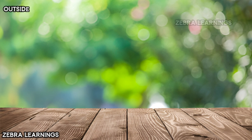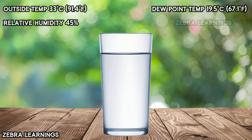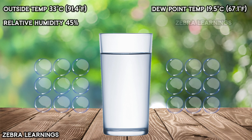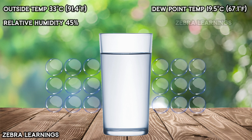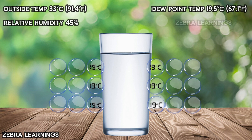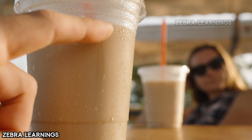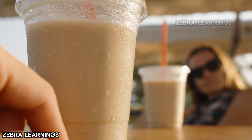Now, under the same conditions — an outside temperature of 33 degrees Celsius and relative humidity of 45% — let's place a glass of ice water outside. The air molecules near the glass will come into contact with it. Upon contact, the temperature of the air molecules surrounding the glass will rapidly decrease. Since the dew point of the air is 19.5 degrees Celsius, when the temperature of these air molecules drops below this point, the water vapor they contain will condense into water on the glass.